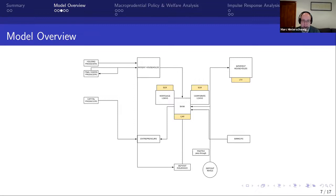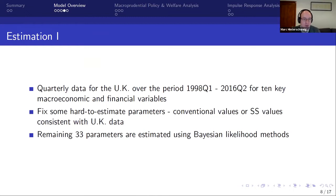The model is based on the ECB's three-layers-of-default model with patient households, impatient households, and a banking sector capable of issuing mortgage and corporate loans. For estimation, we use quarterly UK data over roughly 20 years for 10 key variables, mostly interest rates and growth rates. We fix hard-to-estimate parameters at conventional literature values or UK steady-state values, then estimate the remaining parameters using Bayesian likelihood methods.